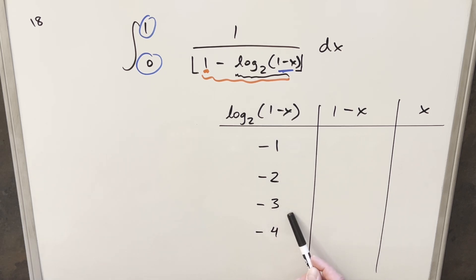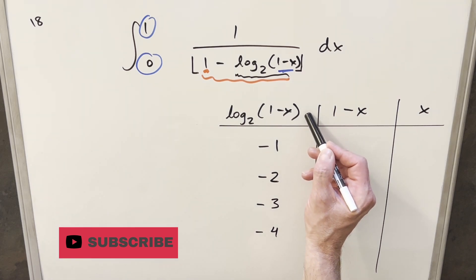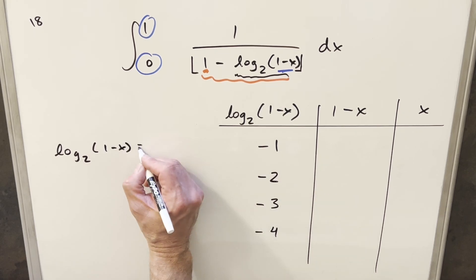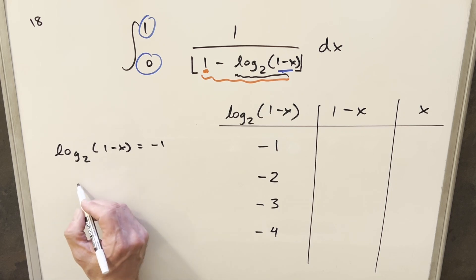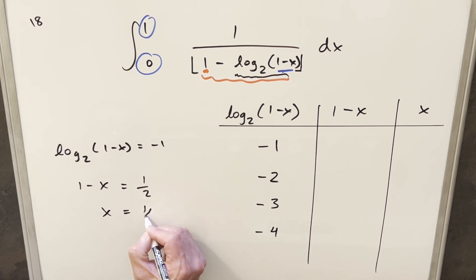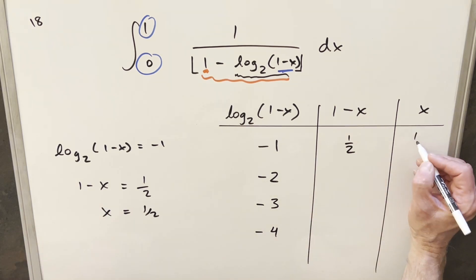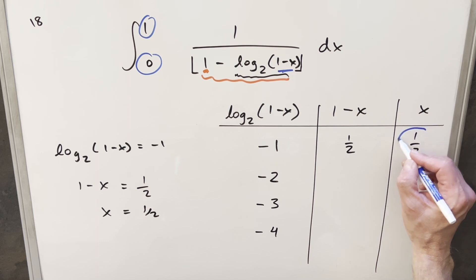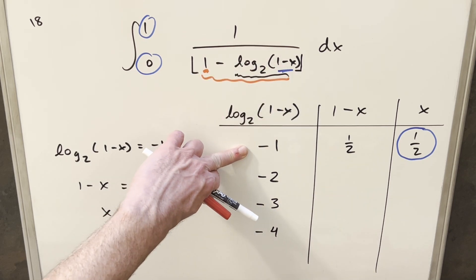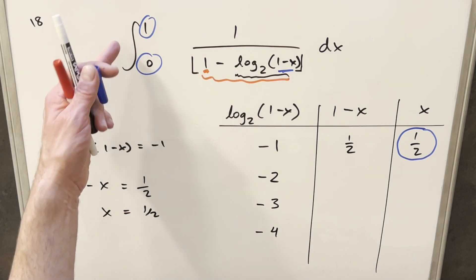Here we have our table analyzing a few negative integer values. For each value, we set n equal to log base 2 of 1 minus x and solve. When log base 2 of 1 minus x equals -1, we get 1 minus x equals 2 to the -1, or 1/2, so x equals 1/2. When it equals -2, we get 1 minus x equals 1/4, so x equals 3/4. For -3, we get 1/8, so x equals 7/8. And for -4, we get 1/16, so x equals 15/16. These x values keep going, getting closer and closer to our upper bound of 1 but never reaching it.